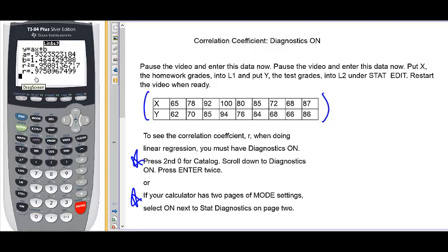Another way to do this, if your calculator has two pages of modes, is to look for the stat diagnostics and make sure that it's set to on by hitting enter. If your calculator has that, that's a second way to turn diagnostics on.